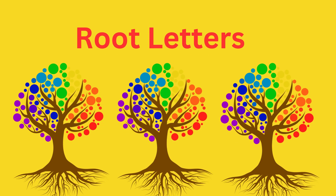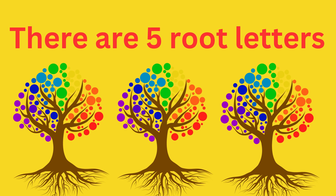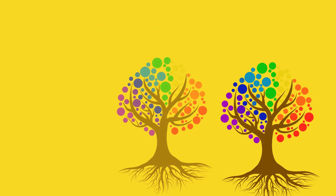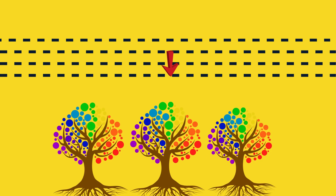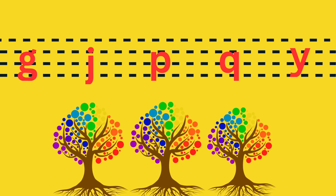Root Letters. There are five root letters. They start from the second line and end at the fourth line. These are G, Z, E, U, and Y.